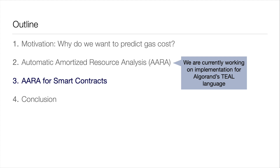Currently we're working on an implementation of this for the Algorand TEAL language. Why do I think automatic amortized resource analysis is a particularly good fit for smart contracts? There are two reasons.